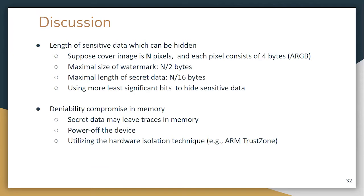In the discussion, the first point concerns payload. Suppose the cover image is n pixels, each pixel contains 4 bytes, and each byte can hide 1 bit. Then the maximum watermark size is n/2 bytes and the maximum secret data length is n/16 bytes. To increase payload, we can use more least significant bits, but this decreases image quality. Balancing payload and image quality is left to future work.